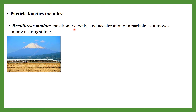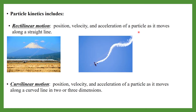In rectilinear motion, the position, velocity and acceleration of a particle is along a straight line — as you can see, a train moving in a straight line, or straight roads, or an aeroplane during flight. In curvilinear motion, position, velocity and acceleration of a particle is along a curved line in two or three dimensions; the curved line may be in 2D or 3D.